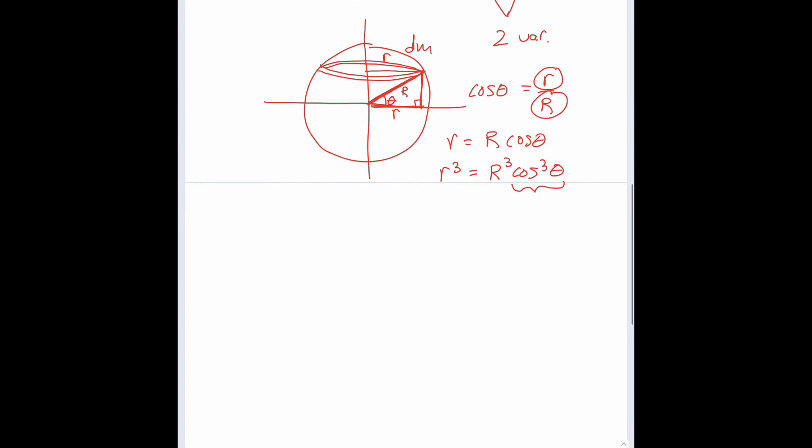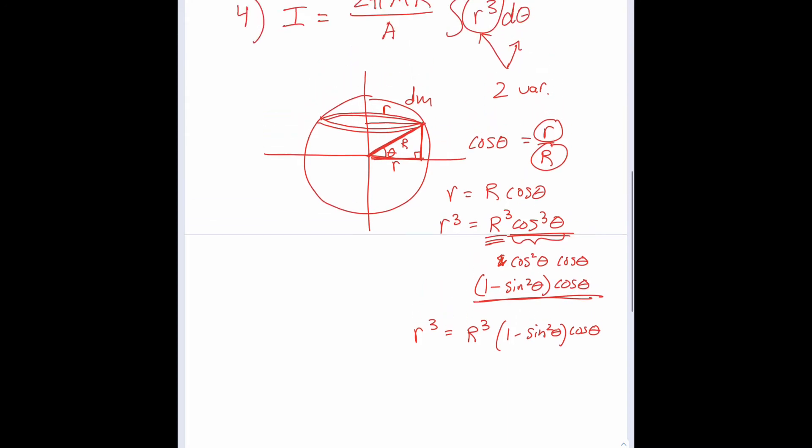So little r³ is equal to big R³ cosine³θ. Here we can employ a little trick and say that cosine³θ is the same thing as cosine²θ cosine θ. But cosine²θ, as you know, is 1 minus sine²θ. So there we go: 1 minus sine²θ times cosine θ is the same thing as cosine³θ. So in all, lowercase r³ is equal to capital R³ times 1 minus sine²θ cosine θ. So there's a substitution we can make in place of lowercase r³.